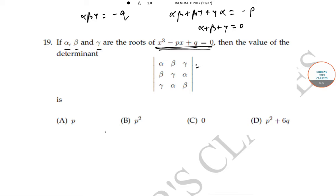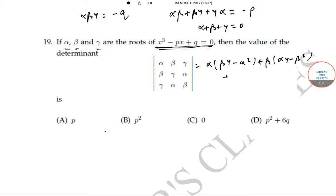This determinant is equal to alpha times (beta gamma minus alpha squared) plus beta times (alpha gamma minus beta squared) plus gamma times (alpha beta minus gamma squared), which equals three alpha beta gamma minus (alpha cubed plus beta cubed plus gamma cubed).